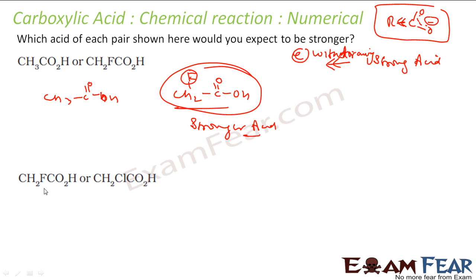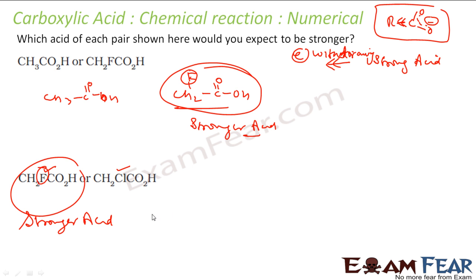Comparing fluorine and chlorine: fluorine is more electron withdrawing than chlorine. So CH2F-COOH is a stronger acid than CH2Cl-COOH. Because fluorine is more electron withdrawing, it makes the CH2F-COO minus product more stable, so this is the stronger acid.